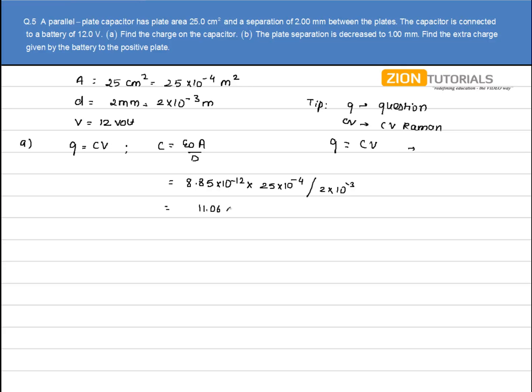The capacitance is 11.06×10⁻¹² F. Now Q = CV = 11.06×10⁻¹² × 12V, so the charge comes out to be 1.32×10⁻¹⁰ coulombs.